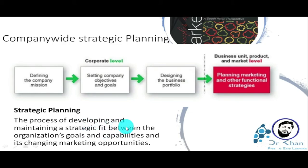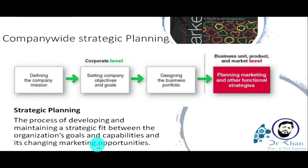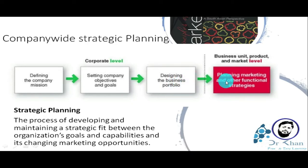The strategic fit focuses on three things: the organization's goals and capabilities, and its changing marketing opportunities — how to avail them in the market. For this, the company has to go through a four-step process for strategic planning: defining the company mission, setting company objectives and goals, designing the business portfolio, and planning marketing and other functional strategies.